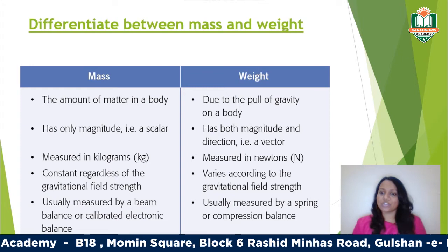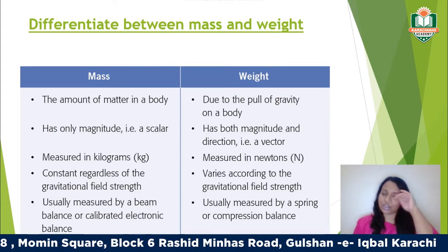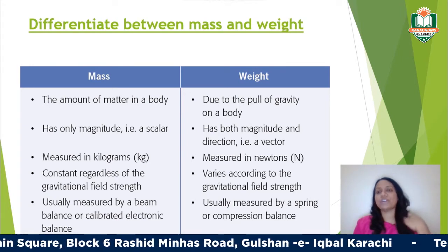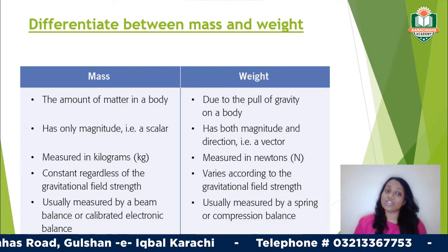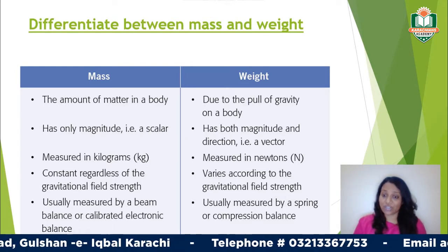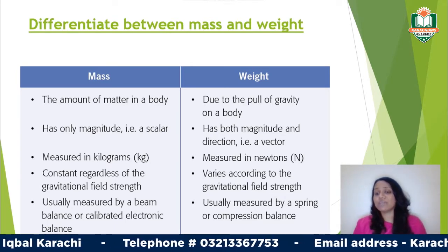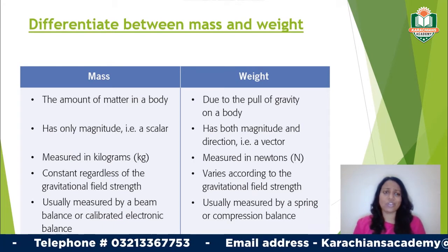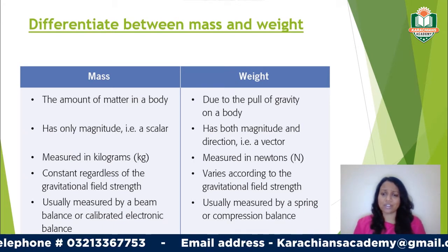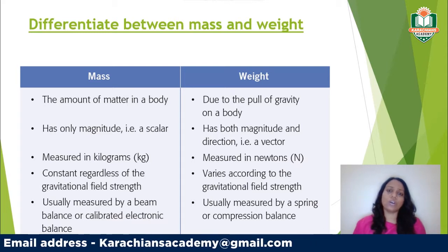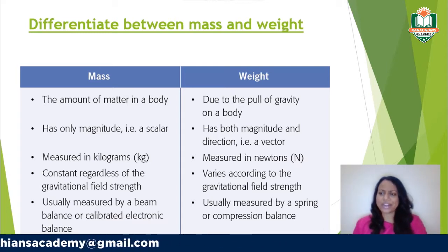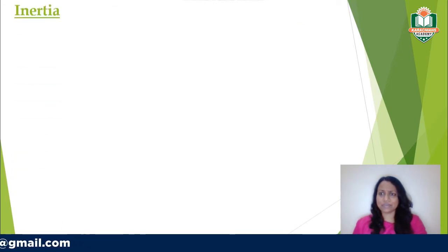Mass is constant regardless of gravitational field strength — no matter where you are, the mass remains the same. But weight varies according to the gravitational field strength. Mass is mainly measured by a beam balance or an electronic balance, whereas weight is usually measured using a spring or a compression balance.